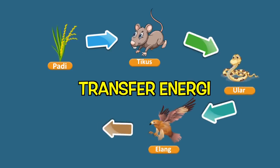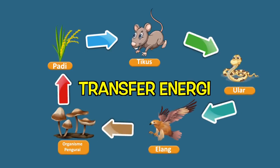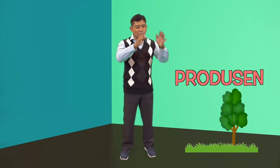Jadi adik-adik sudah mengerti dengan apa yang namanya rantai makanan? Mari kita ulang kembali. Rantai makanan adalah peristiwa transfer energi dari satu makhluk hidup ke makhluk hidup lainnya dengan urutan tertentu. Dalam rantai makanan ada makhluk hidup yang berperan sebagai produsen, ada pula yang berperan sebagai konsumen, dan ada yang berperan sebagai pengurai. Dengan demikian, rantai makanan sangat berpengaruh terhadap tatanan susunan makhluk hidup dalam suatu ekosistem.